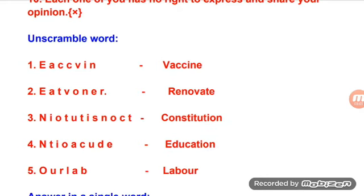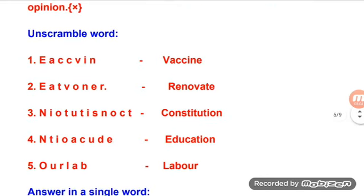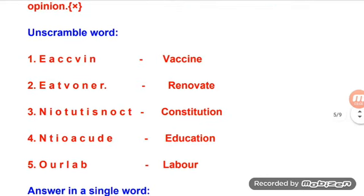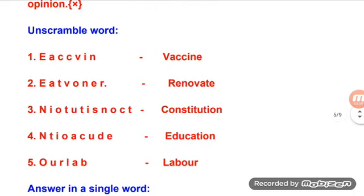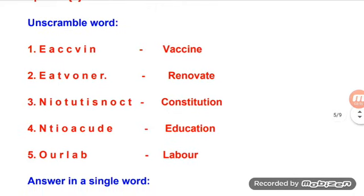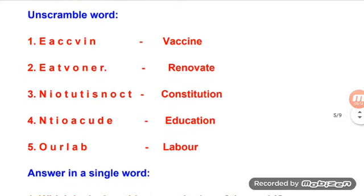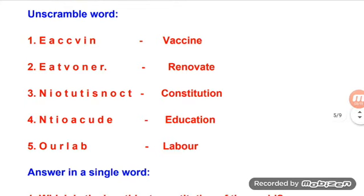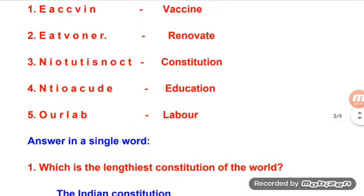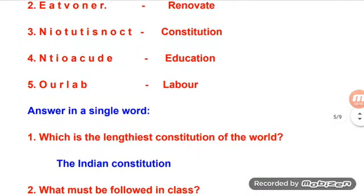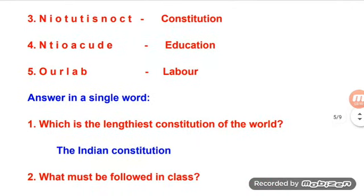Unscramble the words: e-a-c-c-v-i-n = vaccine; e-a-t-v-o-n-g-r = renovate; n-i-o-t-u-t-i-s-n-o-c-t = constitution; n-t-i-o-a-c-u-d-e = education; o-u-r-l-a-b = labor.